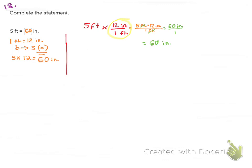So question 18, we have our two methods. We were looking at 5 feet going into 60 inches, so you'll see that here I wrote down our conversion factor. We have 1 foot equals 12 inches.